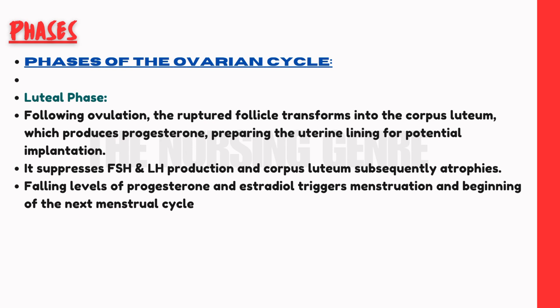This is the luteal phase. After the follicle ruptures and the ovum is released, the follicle changes into the corpus luteum. This corpus luteum releases progesterone hormone. When ovulation occurs and the ovum meets the sperm, pregnancy can result, and the zygote implantation produces progesterone hormone. It suppresses follicle-stimulating hormone and luteinizing hormone, and the corpus luteum subsequently atrophies and disappears.